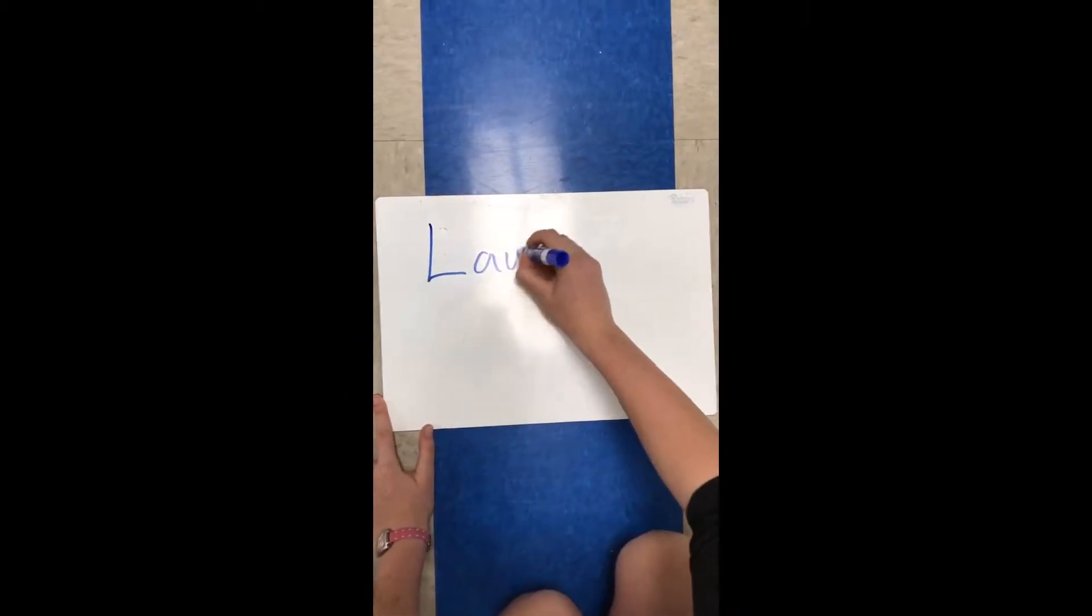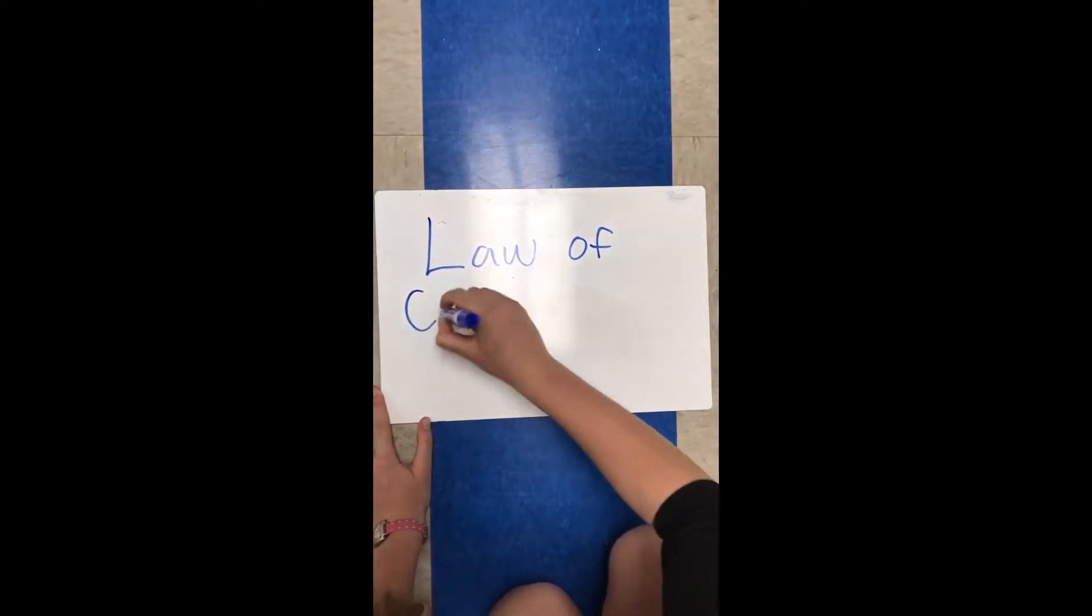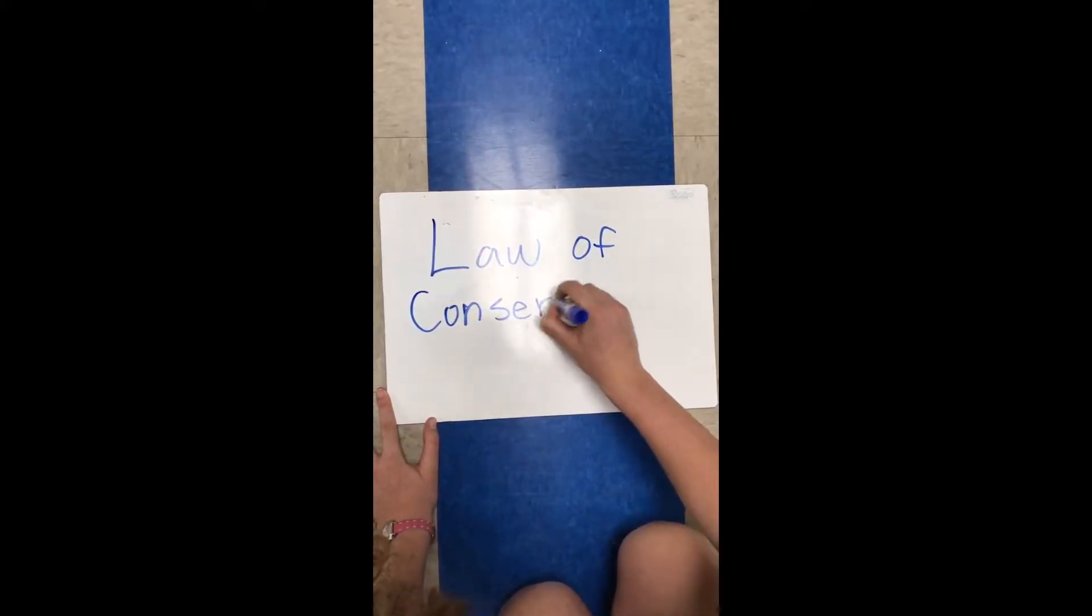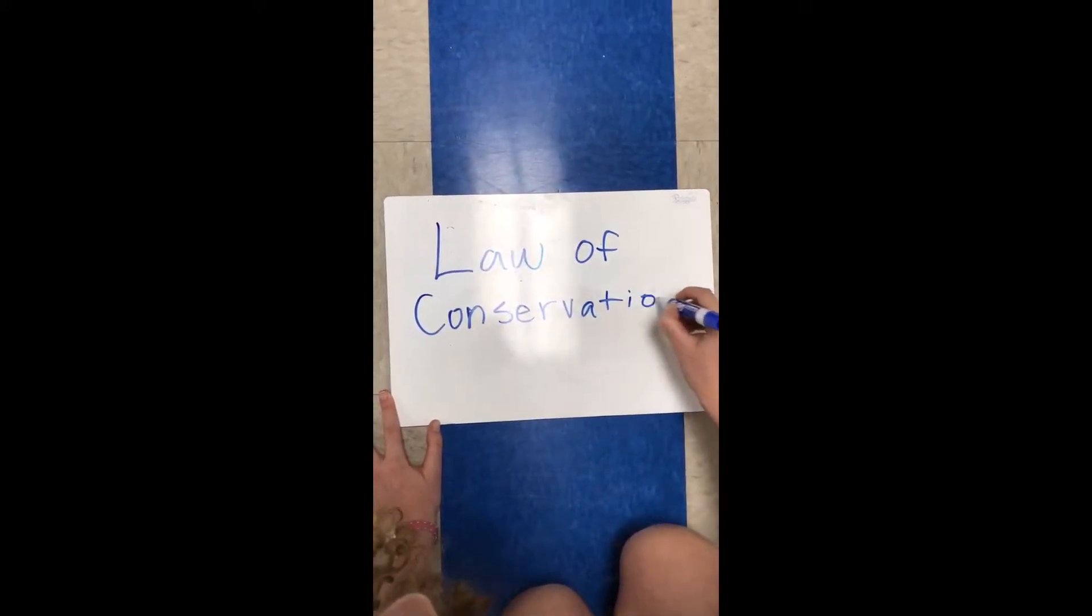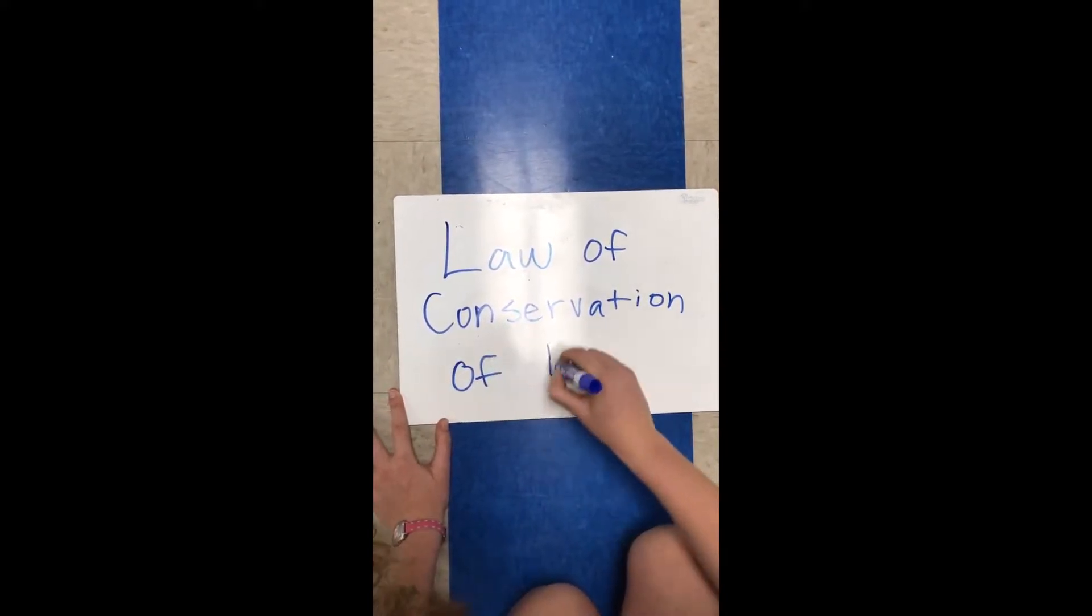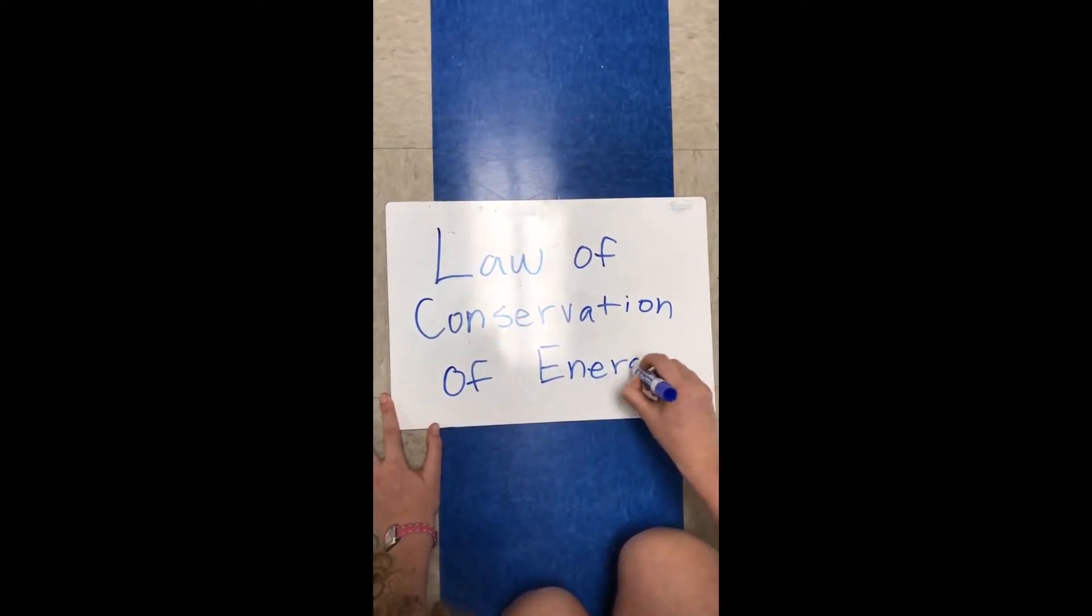The same concept can be applied for energy. The law of conservation of energy states that the total energy of an isolated system remains constant. It is said to be conserved over time. Energy can neither be created nor destroyed. Rather, it transforms from one form to another.